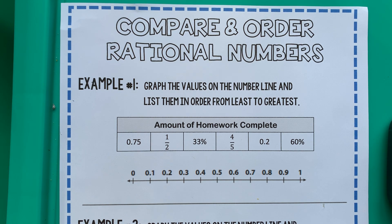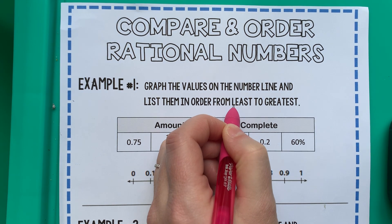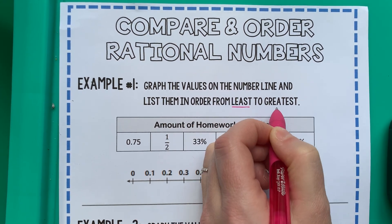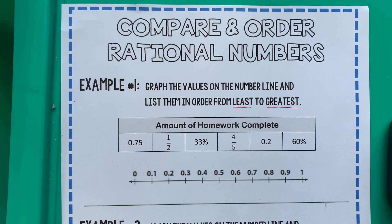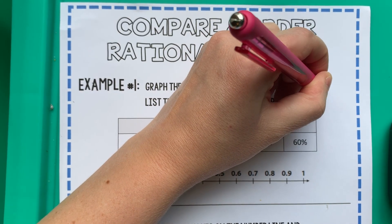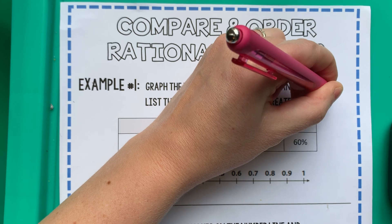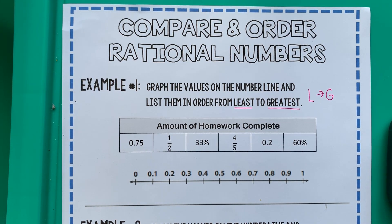So let's look at example one. It says graph the values on the number line and list them in order from least to greatest. Those words are important — let's go ahead and underline the words 'least to greatest.' I would want you to write out to the side 'L to G.' That's a nice big symbol to our brain. Our brain likes to see it like that, so we know we're going from smallest to biggest.